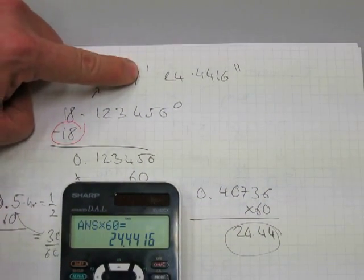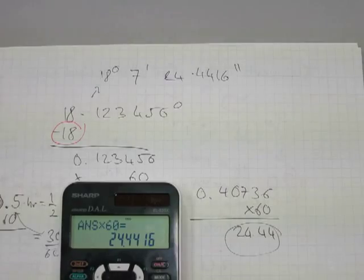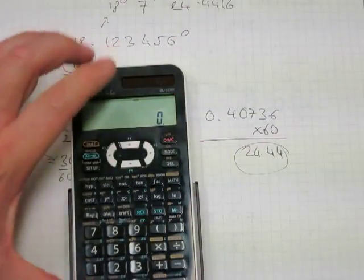So 18.123456 degrees is the same thing as 18 degrees, 7 minutes, and 24.4416 seconds.